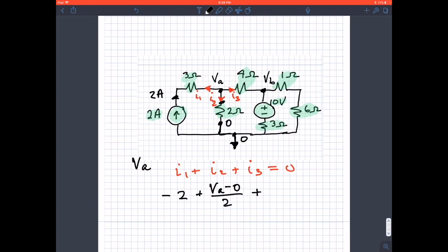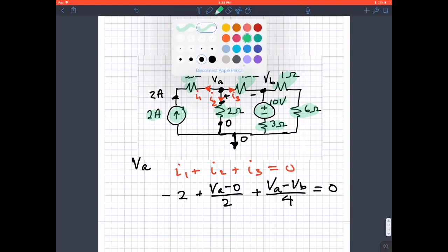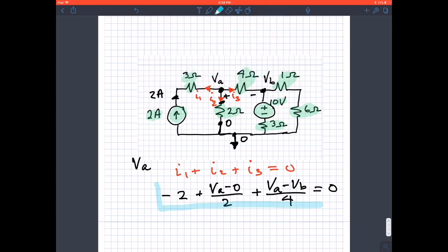We look at I3. I3 is the current through the 4-ohm resistor. The voltage across is VA is plus and VB is minus, so it would be VA minus VB divided by four. That's all the currents, so that equals zero. What you have is the first node voltage equation at VA.